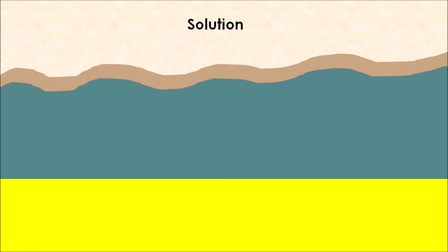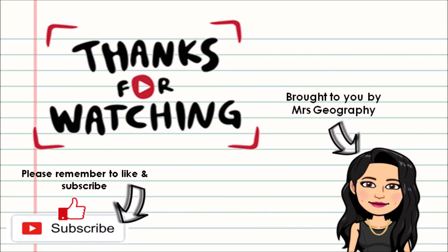Finally, we have solution. Solution involves soluble material that has been dissolved in the water, so we cannot see any sediment or particles — they have been dissolved into the water. Because the sea is constantly moving due to waves, prevailing wind, and friction, that soluble material is transported within our coastline.